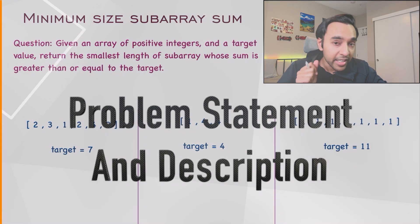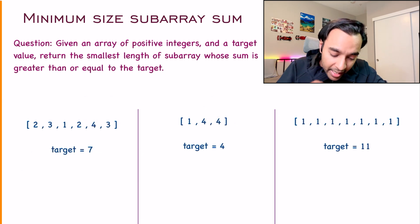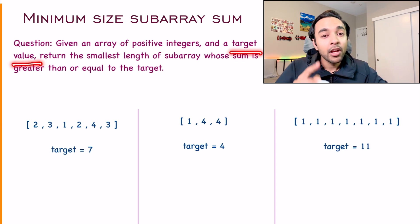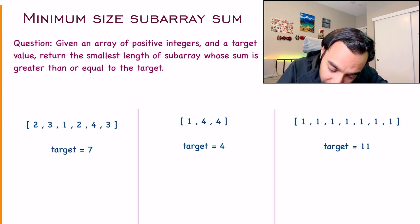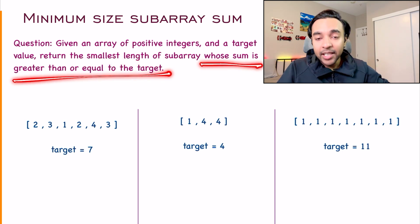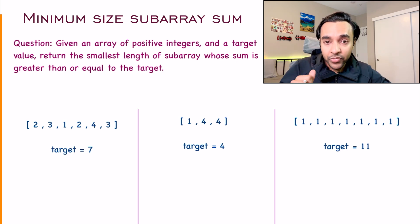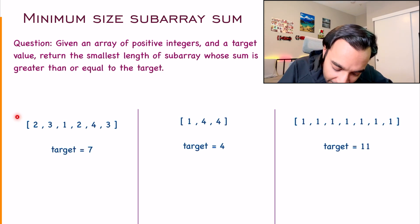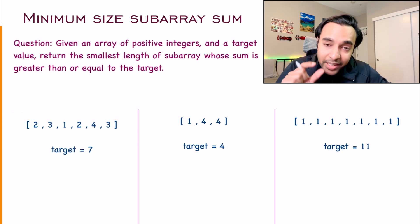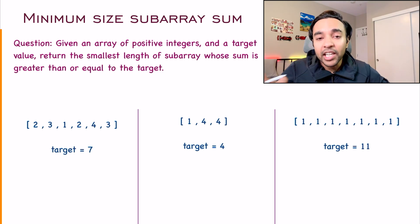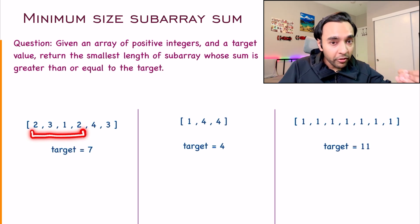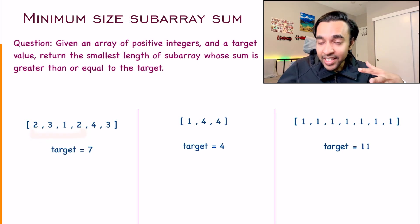First of all, let's make sure that we are understanding the problem statement correctly. In this problem, you are given an array of positive integers and some target value. What you have to do is you just have to tell me the smallest length of a sub-array such that the sum of all the elements is greater than or equal to the target. So, for example, I have this particular test case. The target value is 7. This sum 7 can be formed in multiple ways. For example, if you add all of these elements, then you get a total of 8, and that is greater than 7.